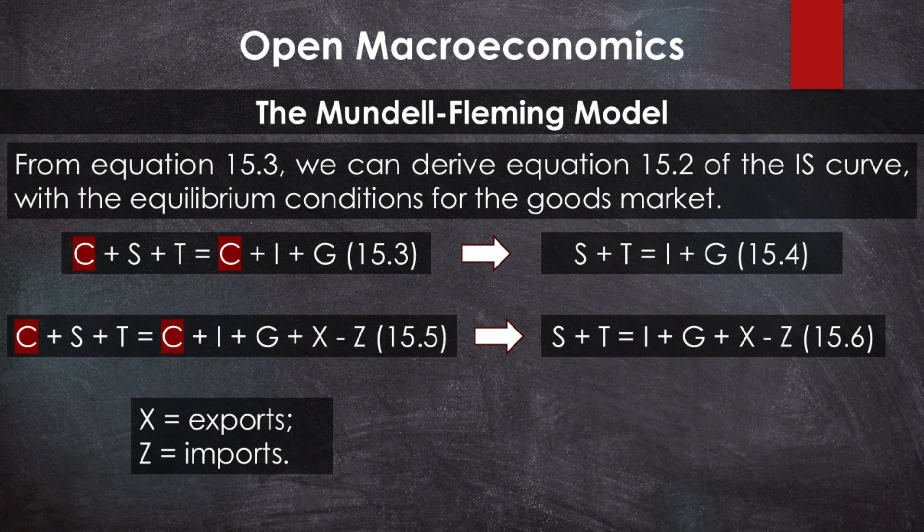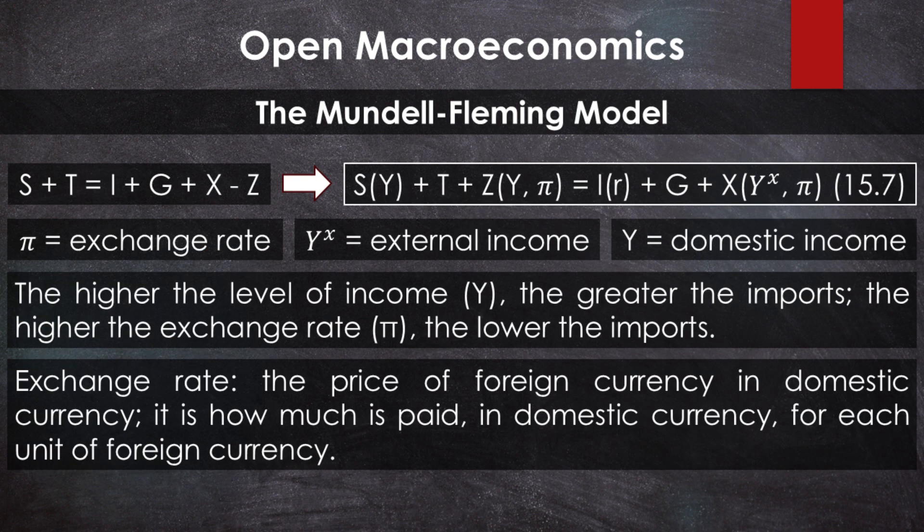Moving imports Z to the other side of the equation — since it is negative, it becomes positive — and including the variables that each element depends on, we can write the IS equation for the open economy as: S as a function of Y, plus T, plus Z as a function of Y and Pi equals I as a function of R, plus G as a function of Y, X, and Pi. Where S equals savings, Y equals income, T equals taxes, Z equals imports, I equals investment, G equals government spending, X equals exports, and Yx equals external income. Savings and investment are the same as in the closed economy model.